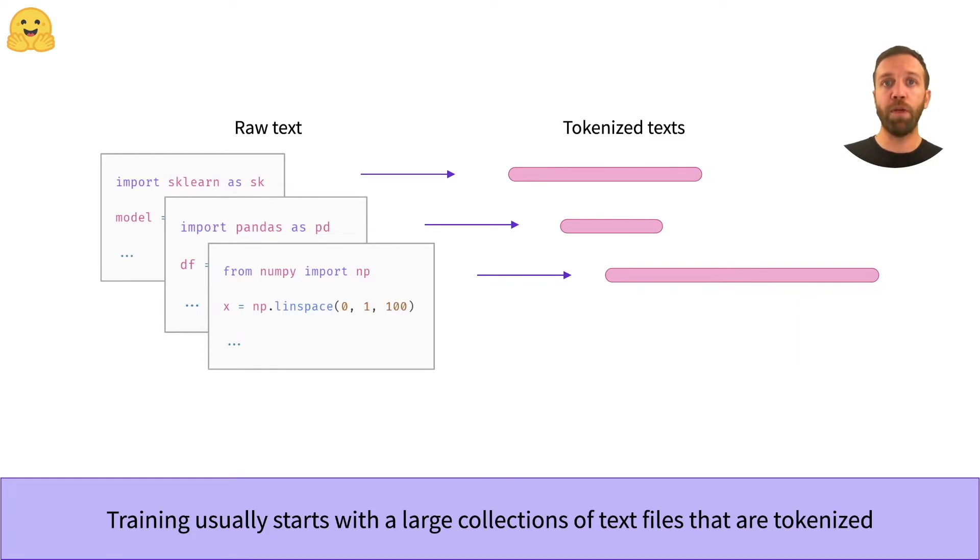As a first step, we need to tokenize these files so we can feed them through the model. Here we show the tokenized texts as bars of various lengths, illustrating that there are shorter and longer ones. This is very common when working with text.